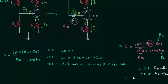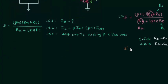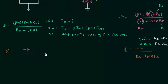Now we will find out S' (also denoted Svbe). S' in emitter bias configuration is equal to −β / (Rb + (β + 1)Re). For voltage divider configuration, S' = −β / (Rth + (β + 1)Re), where Rb is replaced by Rth. S is also denoted as S(Icbo).